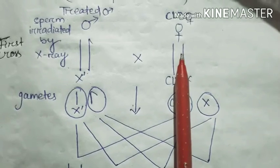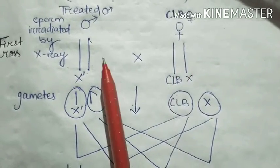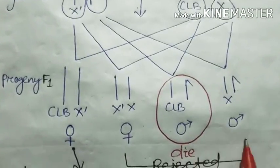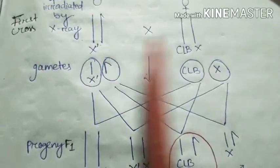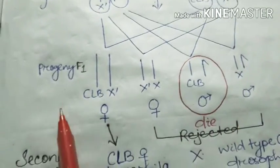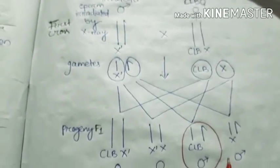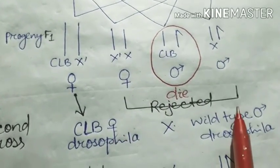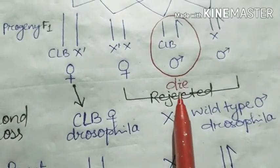He introduced a Drosophila male with X-ray and a Drosophila female with CLB chromosome and allowed them for mating. After their mating, four progenies are produced. These are the gametes produced from these two. After the crossing, these four progenies are found in the first cross.